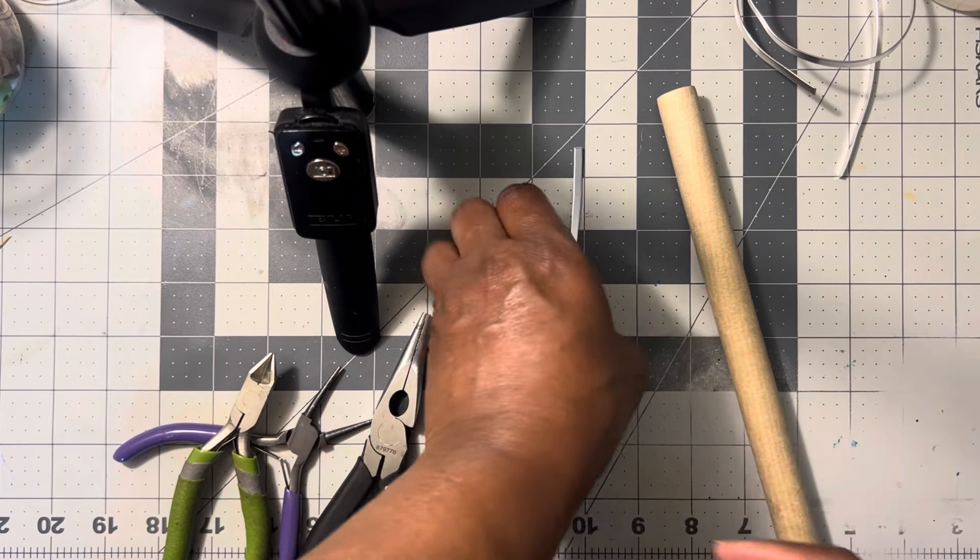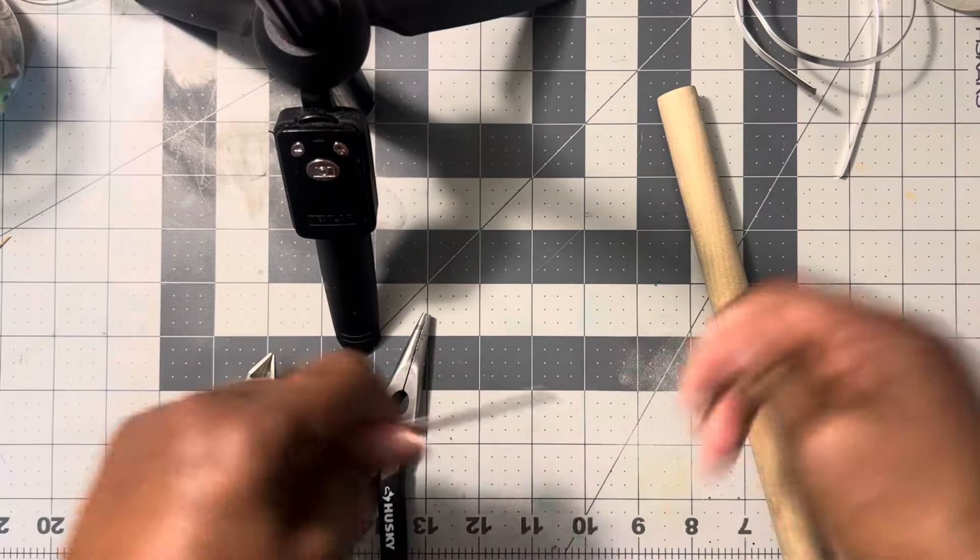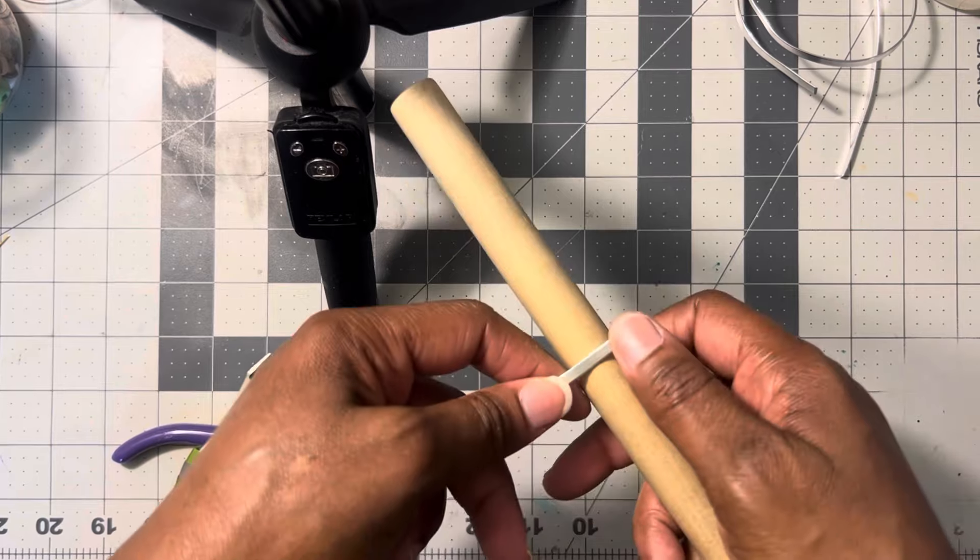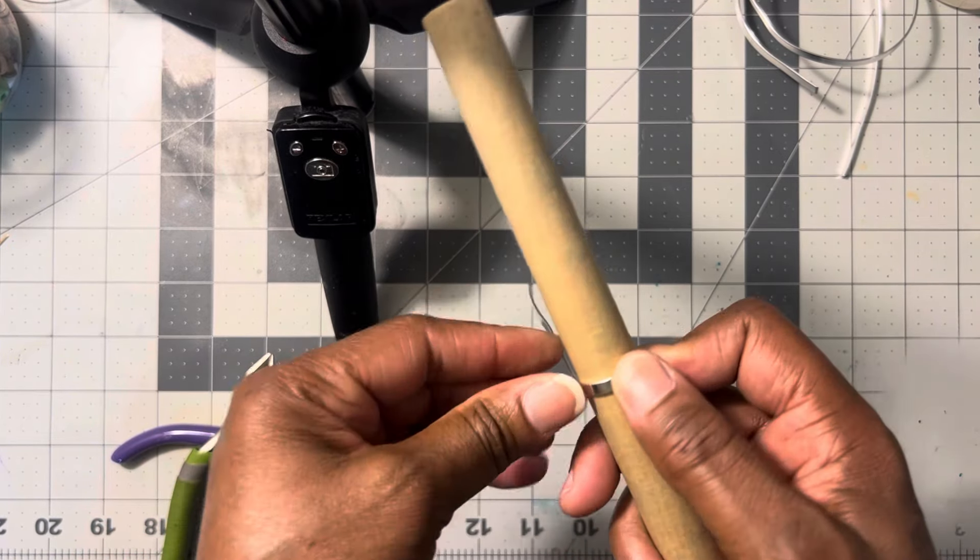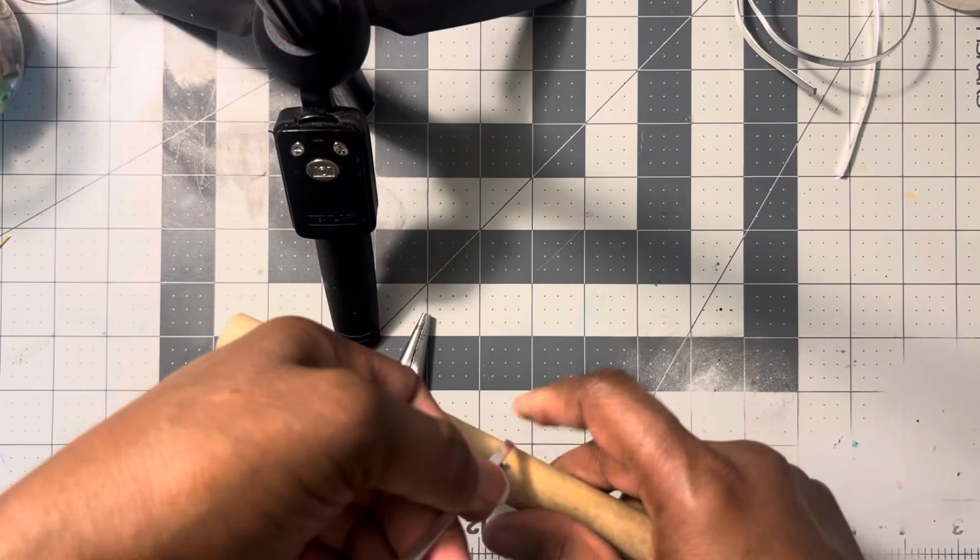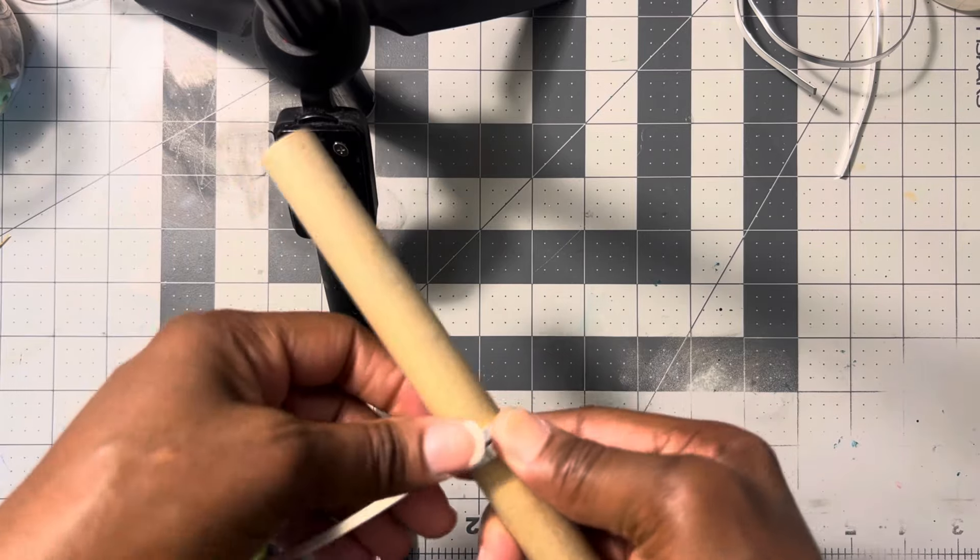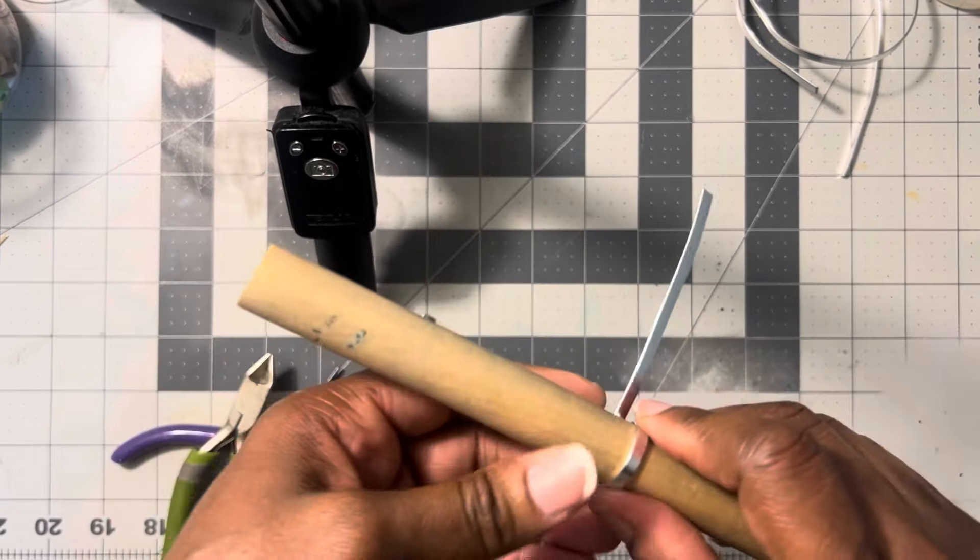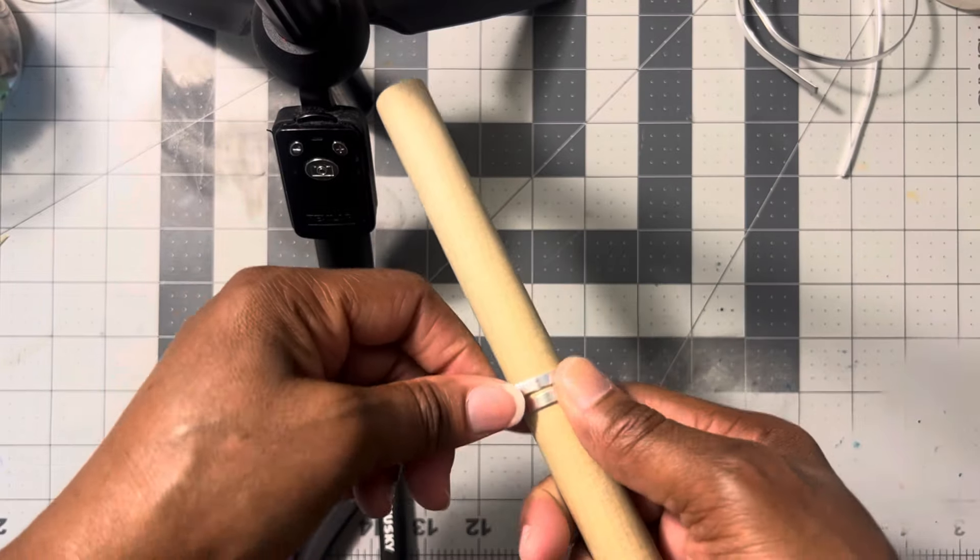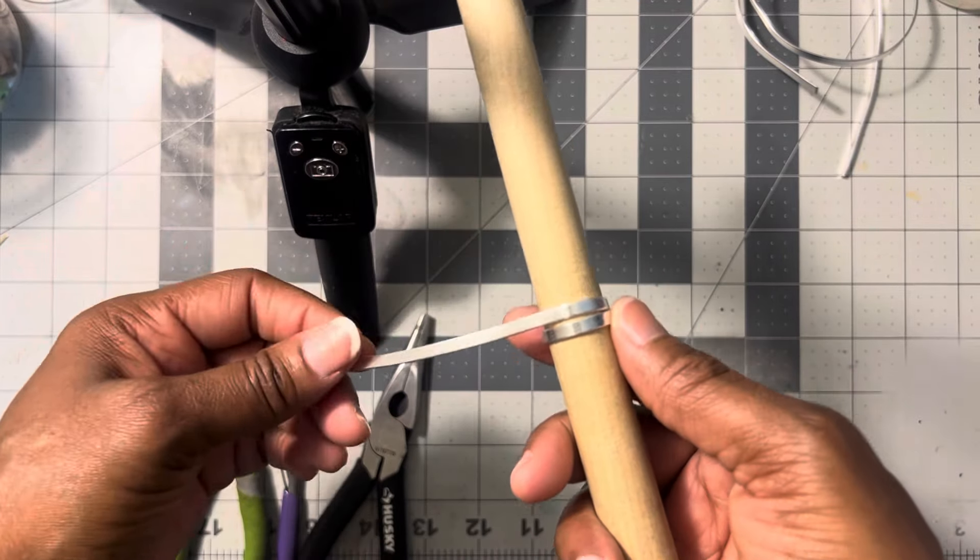So the very first thing I'm going to do is you're going to cut your piece. Then you're going to come over here and you're going to take your dowel. And you're just going to wrap this like a circle all the way around. All right. So I'm going to wrap it just like that.